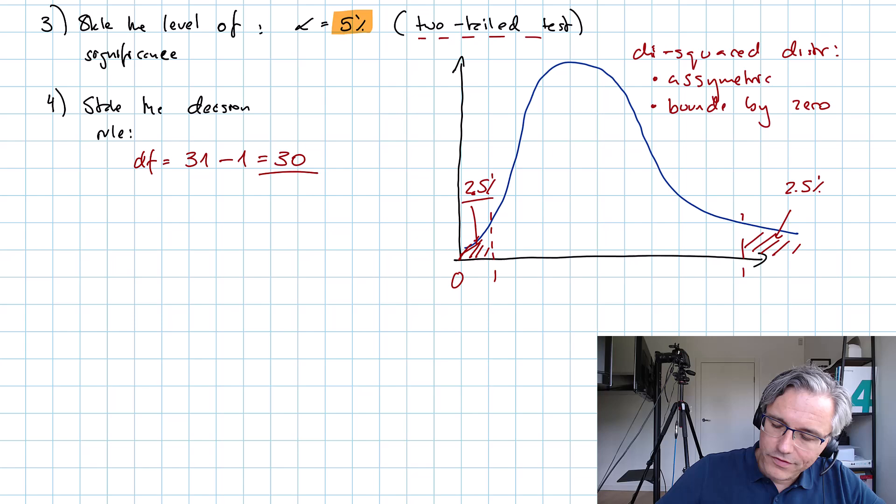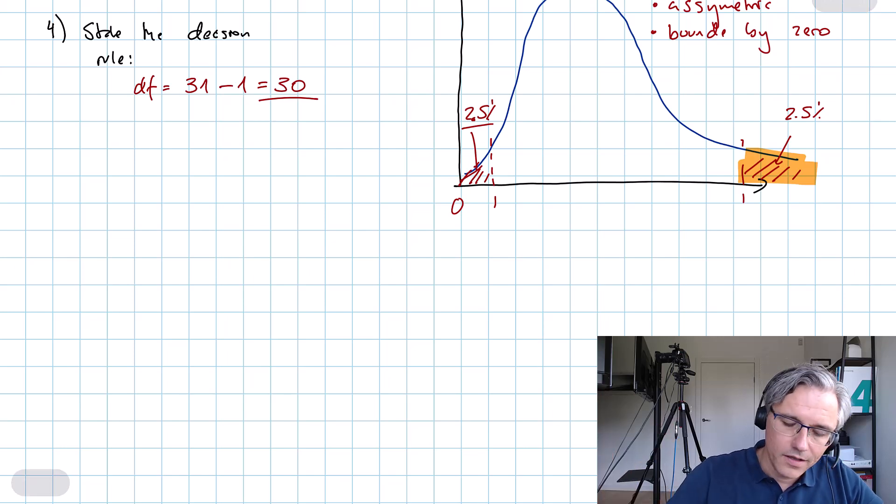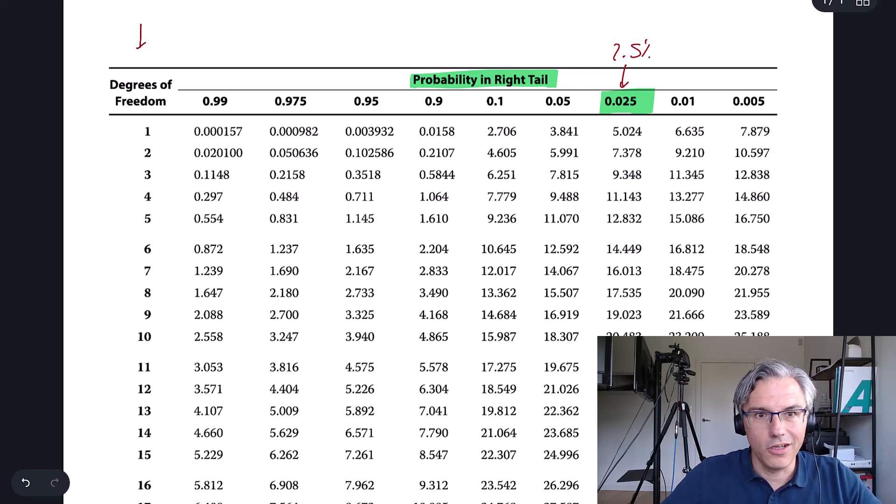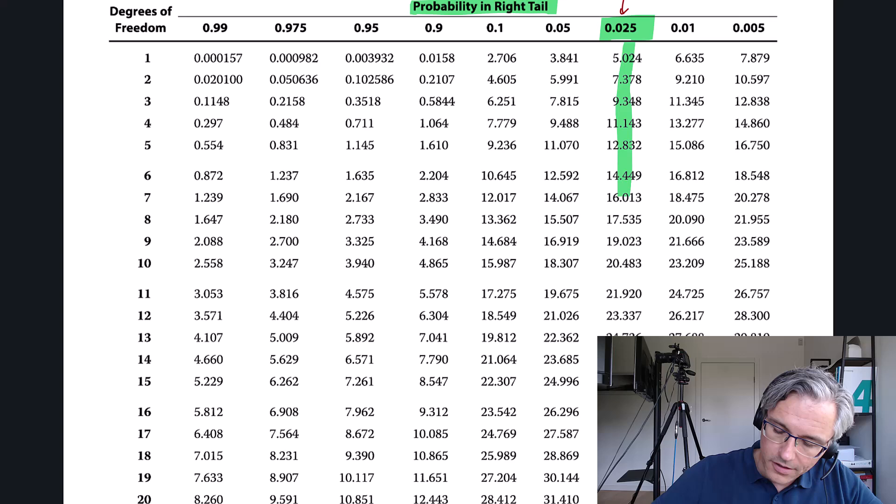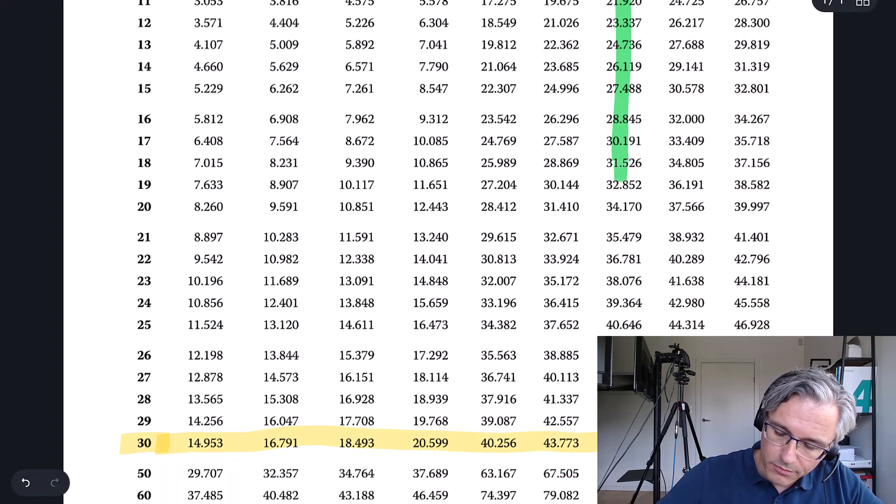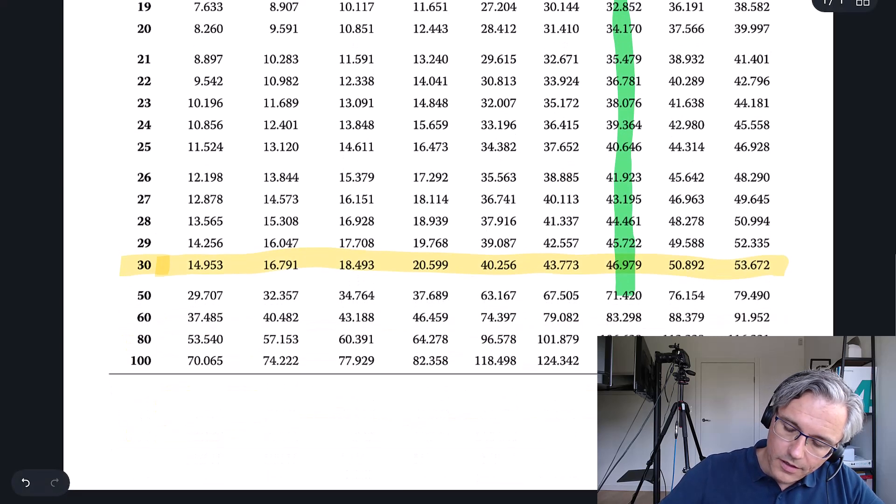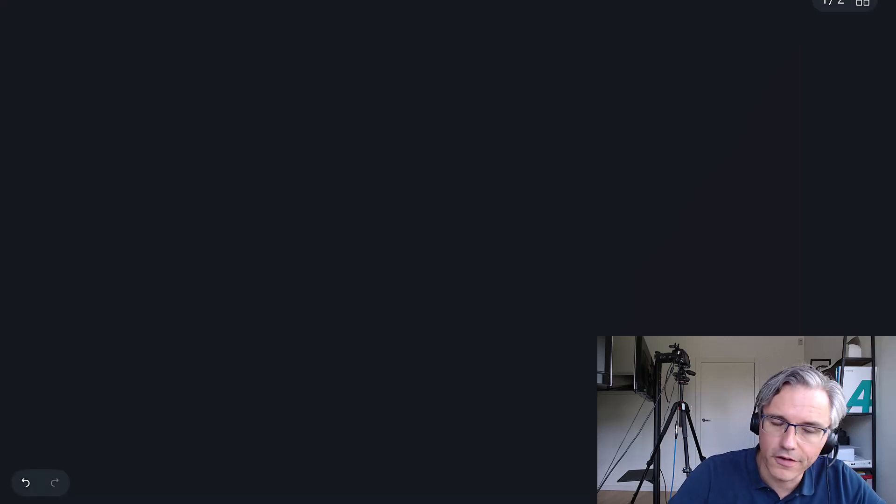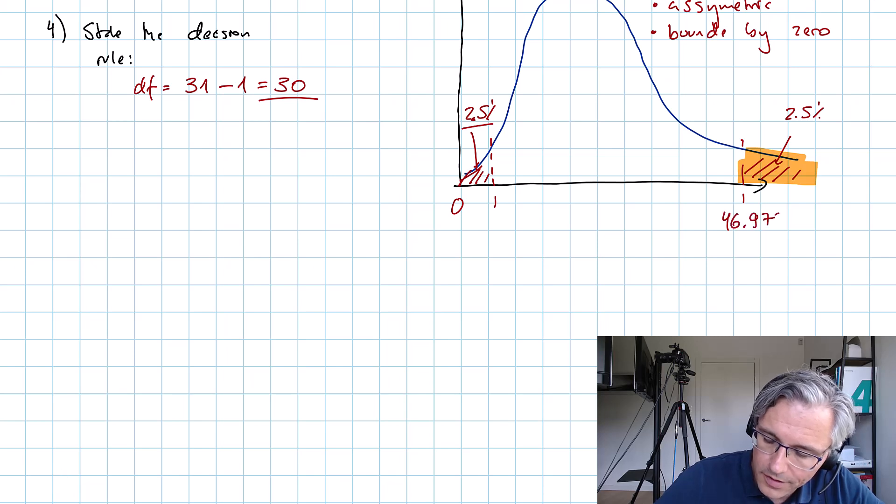I'm going to look for some critical values which leave two and a half percent probabilities on the two sides. Let's start with the right-hand side, this tail containing two and a half percent to the right. Because I want 2.5 percent probability to be stuck in that right-hand tail, I'm going to be looking at this column which says 0.025. When I go down in this column, I come to 46.979. That's going to be the first of my critical values.